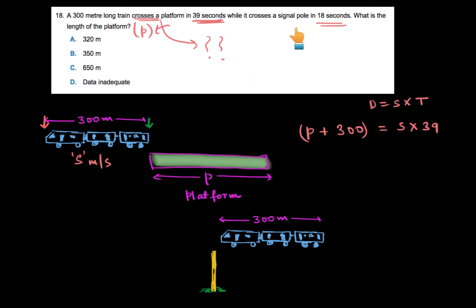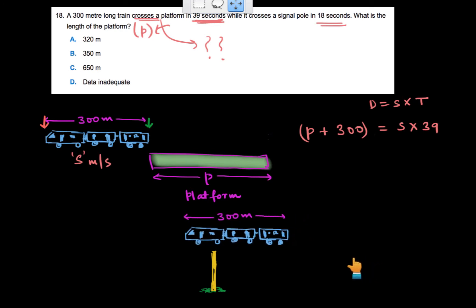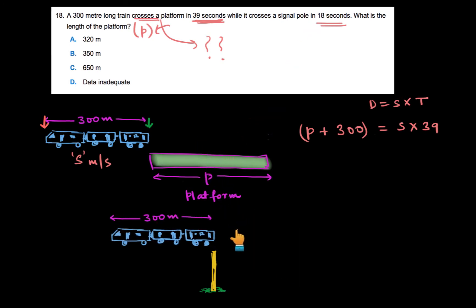Now again, it says that the same train crosses this pole in 18 seconds. Let's see what we actually mean by crossing the pole. So this is our train, it has started crossing the pole, it has still not crossed, it is crossing the pole, but now it has crossed. So what do we actually mean by saying that the train has crossed this pole? It traveled a distance equal to the length of the train. It means that while crossing this pole, the train traveled total of 300 meters.